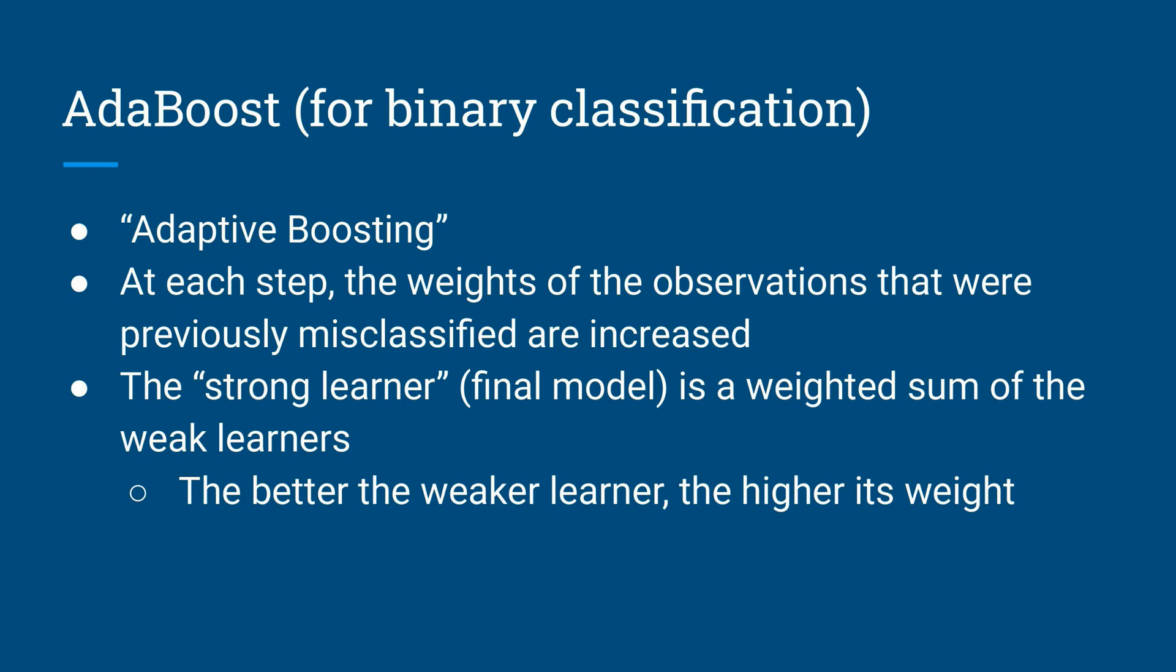At the end, in order to form the final strong learner from the weak learners, a weighted sum of the weak learners is taken. The weights for each of the weak learners is dependent on the performance of the weak learner. In other words, the better the weak learner performed, the higher its weight will be.